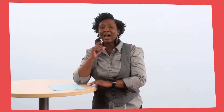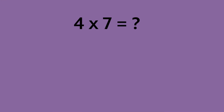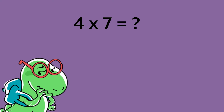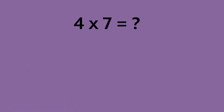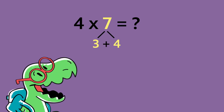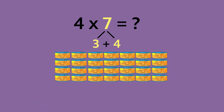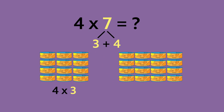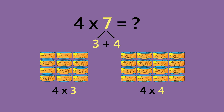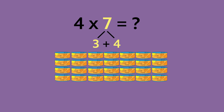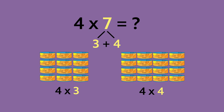Let's break the factor seven apart. I wonder how we should break the factor seven apart. Whisper it to me. I heard someone say that seven is the same value as four plus three — that's excellent thinking. We should decompose four times seven into two groups: four times three and four times four. Look at how that changes our array. Four times seven is the same value as four times three plus four times four.